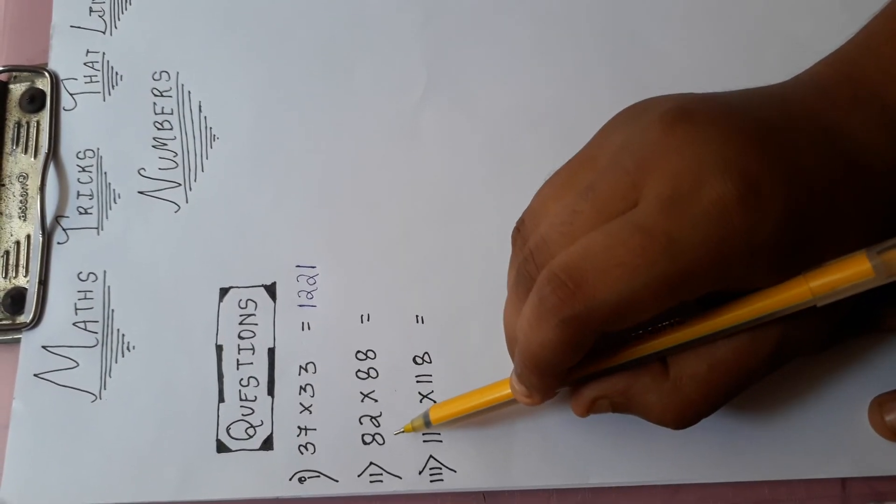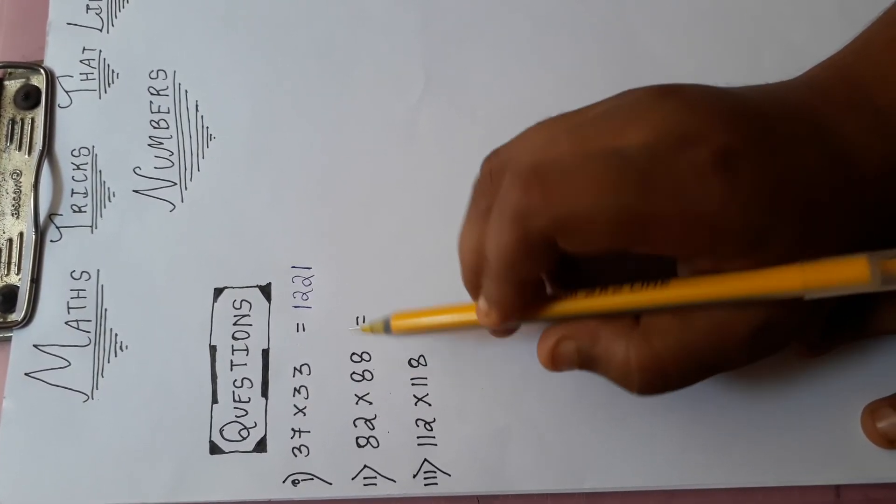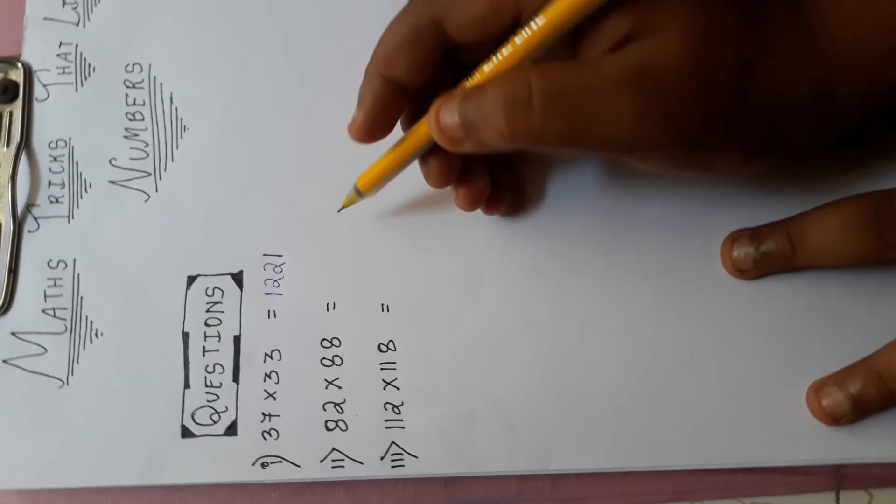This is the second question. 82 into 88. Now with the trick I will show you.